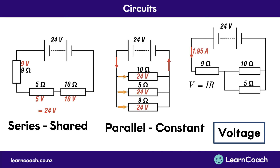Now if we work out the voltage through each resistor in the mixed diagram — if we know the current is 1.95 amps, we multiply this by 9 ohms to find the voltage across that resistor, which equals 17.6 volts. So if we subtract 24 minus 17.6, we have 6.4 remaining. And since parallel circuits have a constant voltage between each branch, both of these branches will have 6.4 volts.